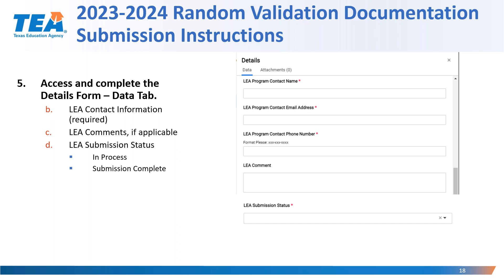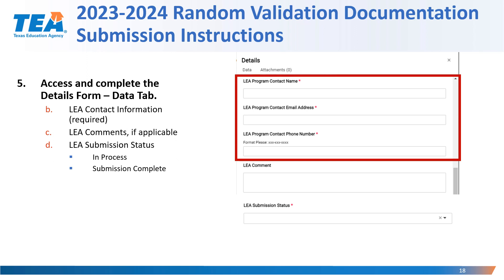Once you've entered the requested documentation page numbers and scrolled down, you will have access to the rest of the form. The rest of the form includes the LEA program contact information section. In this section, you'll complete the remaining fields with the information for the LEA program contact — that should be the person most familiar with the documentation that was submitted. This is the person that TEA will contact if additional documentation or clarification is needed. In this section, you should include the LEA program contact name, their email address, and their phone number.